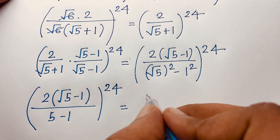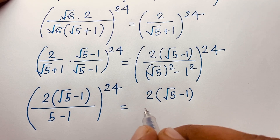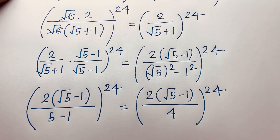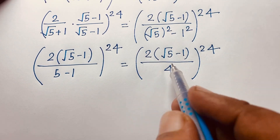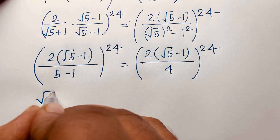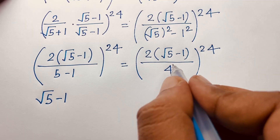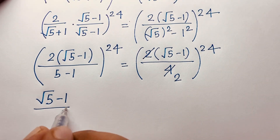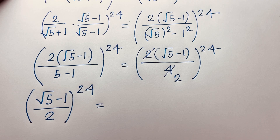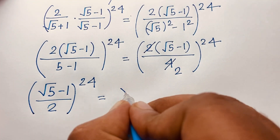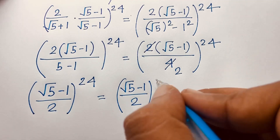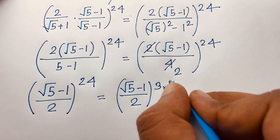So we have 2(square root of 5 minus 1) over 4, whole to the power 24. Simplifying: 4 divided by 2 equals 2, giving us (square root of 5 minus 1) over 2, whole to the power 24. We can rewrite 24 as 3 times 8, so this becomes: (square root of 5 minus 1) over 2, whole to the power 3, bracket to the power 8.